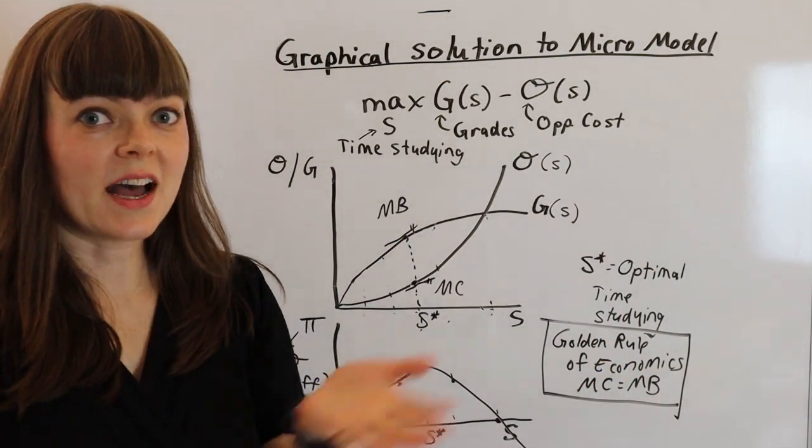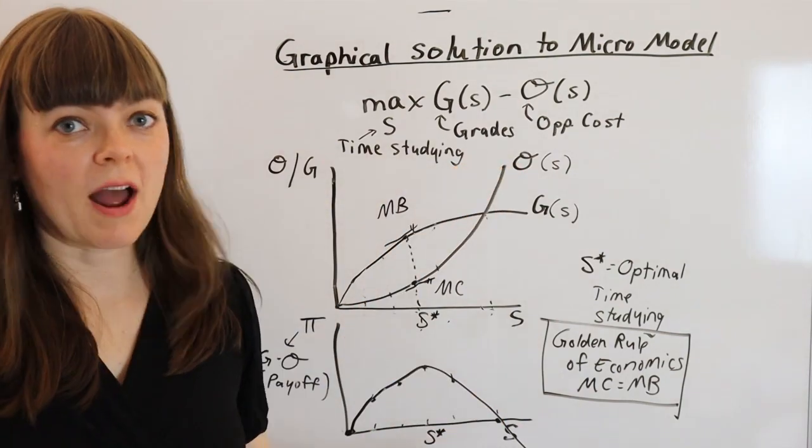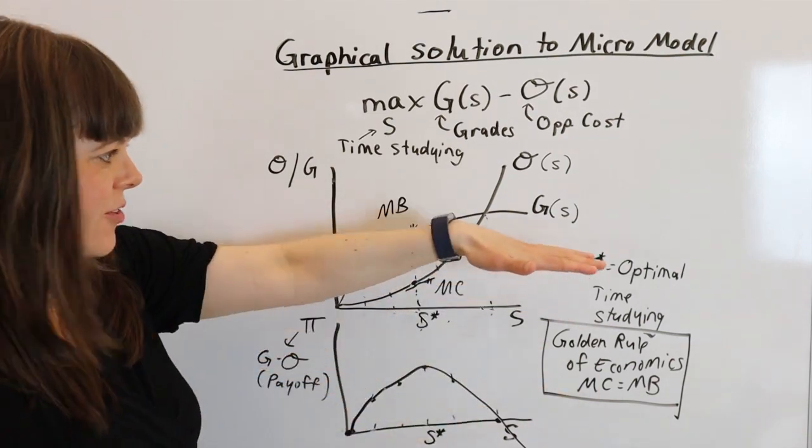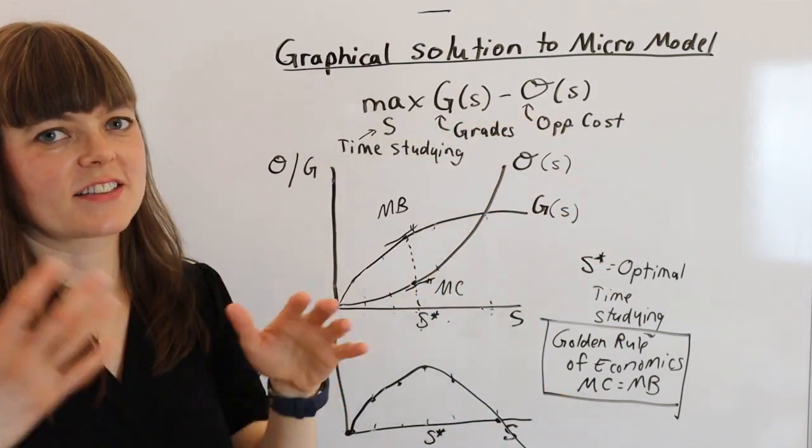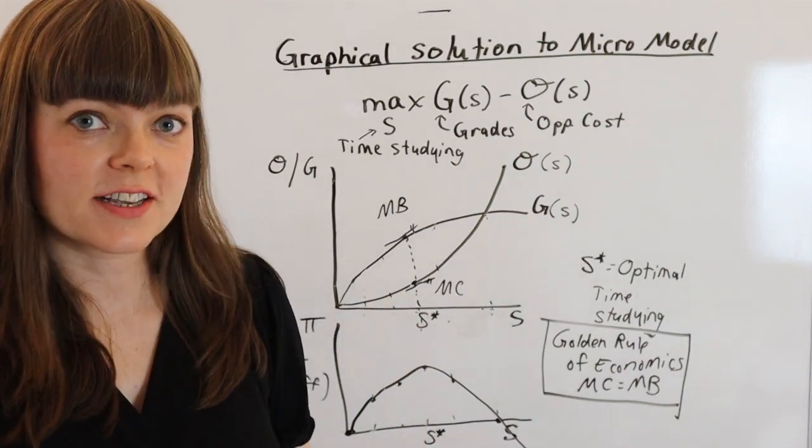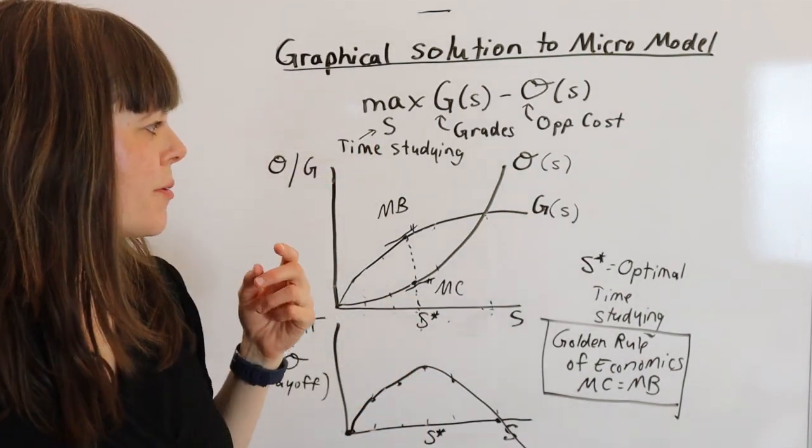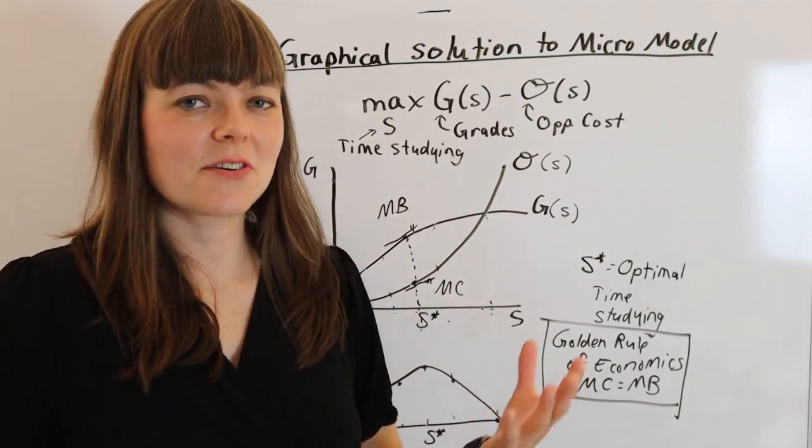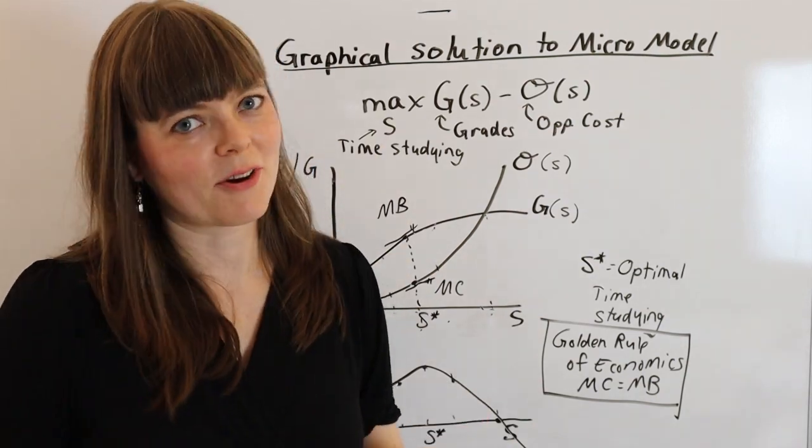And so that's how you solve a model graphically. And of course, we're going to add stuff to this. We're going to add exogenous variables that are going to rotate some of these, and that's going to change the equilibrium. And that is how we will do our thought experiments when we analyze this problem. But this basic structure is going to appear over and over again as you go through the microeconomics course.